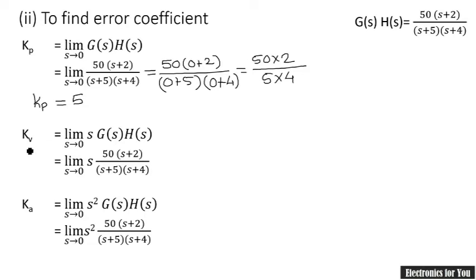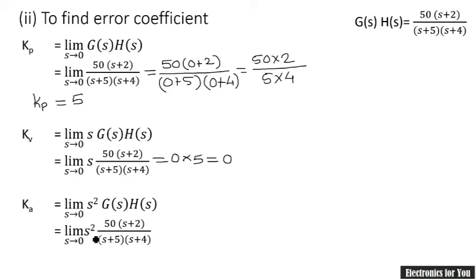Next, we calculate Kv, the velocity error constant. When we put s = 0 after multiplying by s, we get 0 in the result, so Kv equals 0. Similarly, for Ka, multiplying by s² and applying the limit gives Ka equal to 0. So the values of Kp, Kv, and Ka are 5, 0, and 0 respectively.